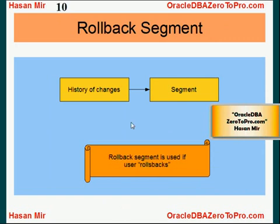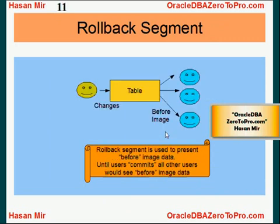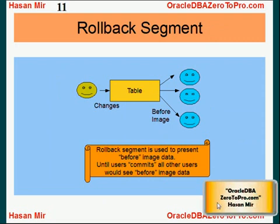Rollback segments store the history of changes. The rollback segment is used when a user rolls back their work, as we just saw. Another important concept is that the rollback segment is also used to present a before image. Let's say this user is making lots of changes to a table and has not committed their work. All other users who are viewing the same table are not supposed to see those uncommitted changes. Everybody else will be looking at the state of the table that existed before this user made changes — this is called the before image.